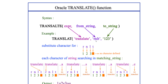For 'a' we have not passed any from_string value, so we get 'a' in the output. For 'n' we are passing '2' as the replacement character, so we get '2'. For 's' we have not specified any from_string, so we get 's'. For 'l' we provided '3', so we get '3'. For the second 'a' we specified nothing, so we get 'a'. For 't' there is no to_string value so Oracle ignores it. For 'e' we have not passed any from_string value, so we get 'e' in the output.